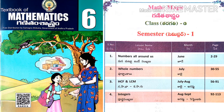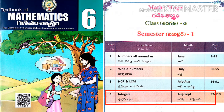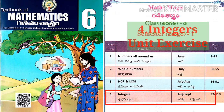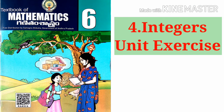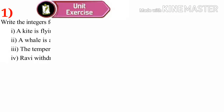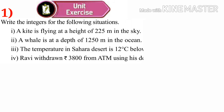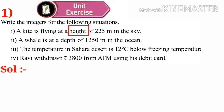Welcome to Shaker Math. Today we are going to learn sixth class mathematics, semester one, fourth chapter — Integers, Unit Exercise problems. First problem: write the integers for the following situations. Solution one: a kite is flying at a height of 225 meters in the sky. Height indicates plus, so plus 225 meters.